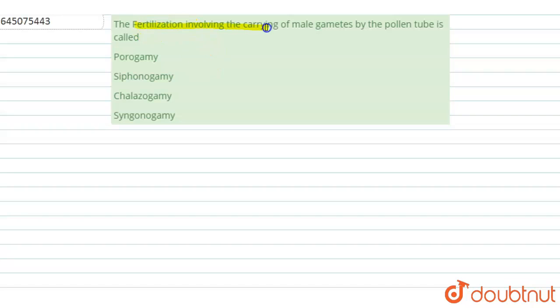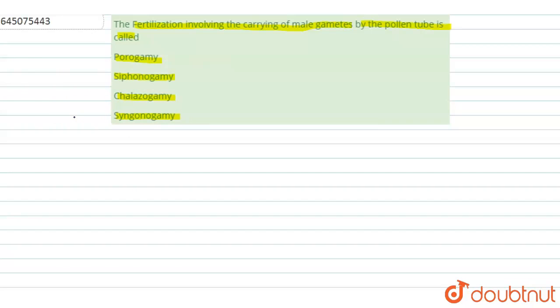The question says: the fertilization involving the carrying of male gametes by the pollen tube is called — the options are: one, porogamy; two, zoidogamy; three, chalazogamy; and four, siphonogamy. We have to define the process in which fertilization occurs with the help of carrying of male gametes by the pollen tube.